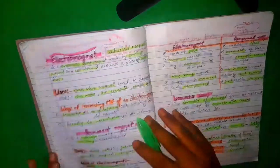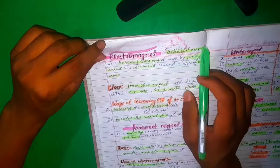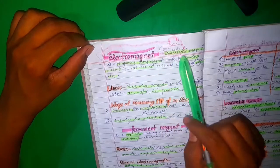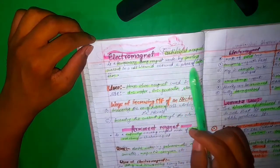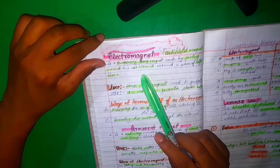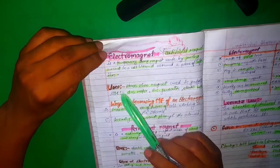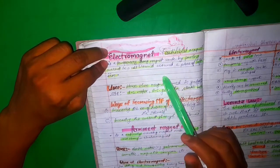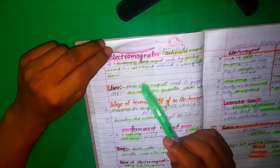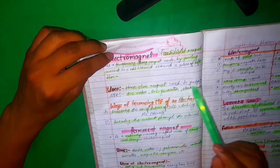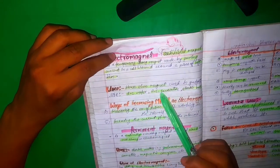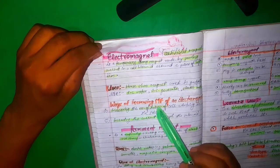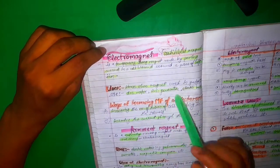Now the electromagnet — it is an artificial magnet. An electromagnet is a temporary, strong magnet made by passing current through a coil wound around a piece of soft iron. Uses include DC motors, AC generators, and many electrical devices. There are two types: horseshoe electromagnet and I-shape electromagnet.